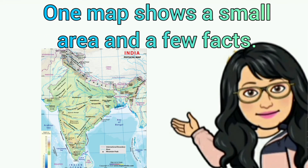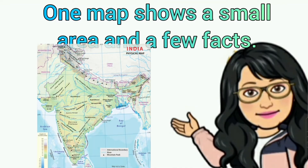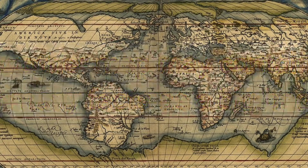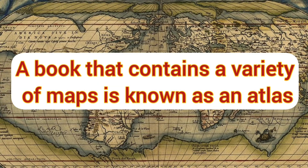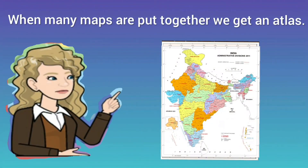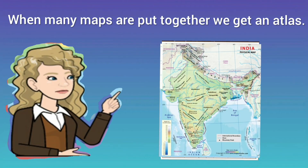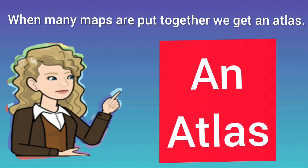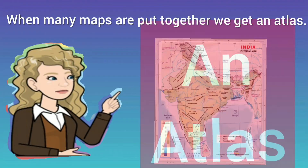One map shows a small area and a few facts; another map may contain as many facts as a big book. A book that contains a variety of maps is known as an atlas — or you can say, when many maps are put together, we get an atlas.